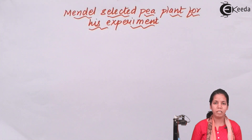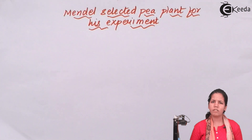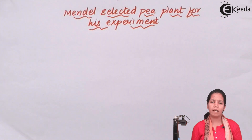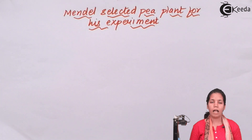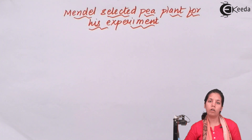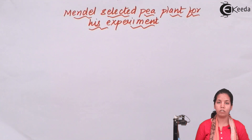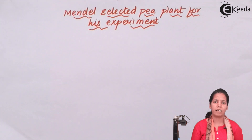Why did Mendel use Pisum sativum for his experiments when so many plants were available? One reason was that pea plants produce progeny much faster — the F1 and F2 progenies. Hybridization of pea plants was easy and could be done at a very fast pace. Pea plants produce flowers, fruits, and pods to compare, and they were easy to grow and easy to maintain.